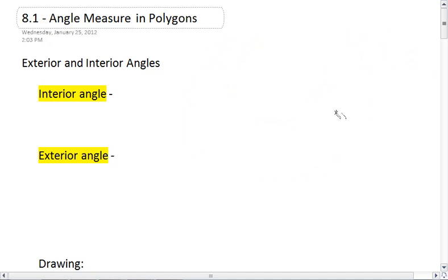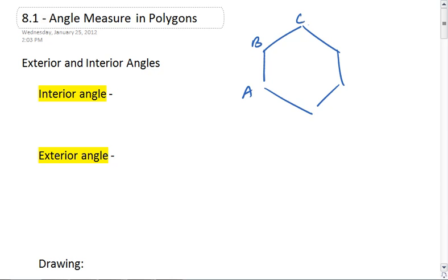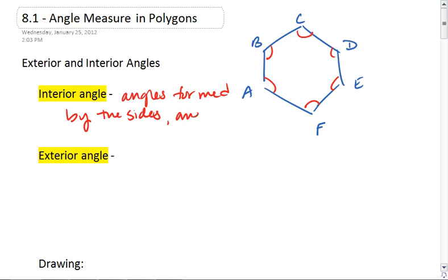Well in a convex polygon, such as hexagon ABCDEF, we have what are called interior angles. Those are angles formed by the sides and on the interior of the polygon. So wherever we have a vertex, we have one interior angle.